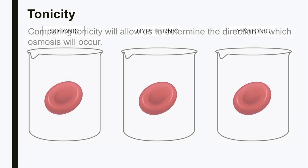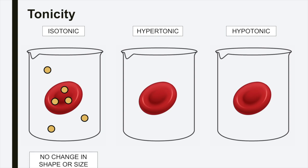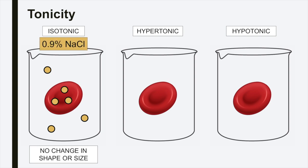To demonstrate how tonicity affects the cell, we will place a red blood cell in three different solutions: an isotonic solution, a hypertonic solution, and a hypotonic solution. In an isotonic solution, the concentration of solutes outside the cell is equal to the concentration of solutes inside the cell. If we place a blood cell into an isotonic solution, water will move freely into and out of the blood cell, and the size of the cell will remain unchanged. A 0.9% sodium chloride solution, or physiological saline, is isotonic to red blood cells.